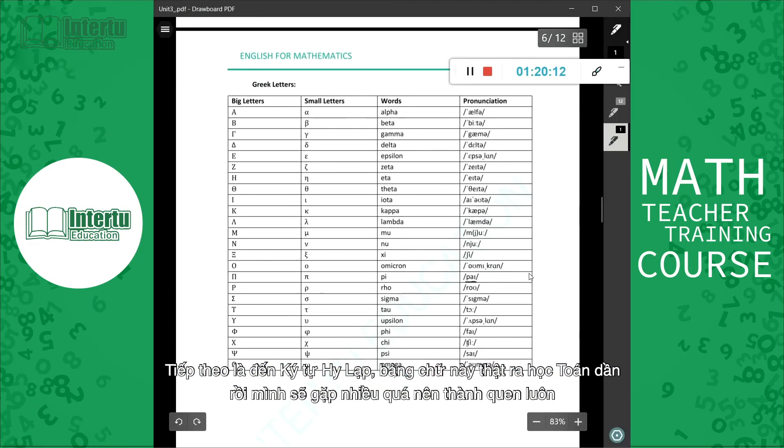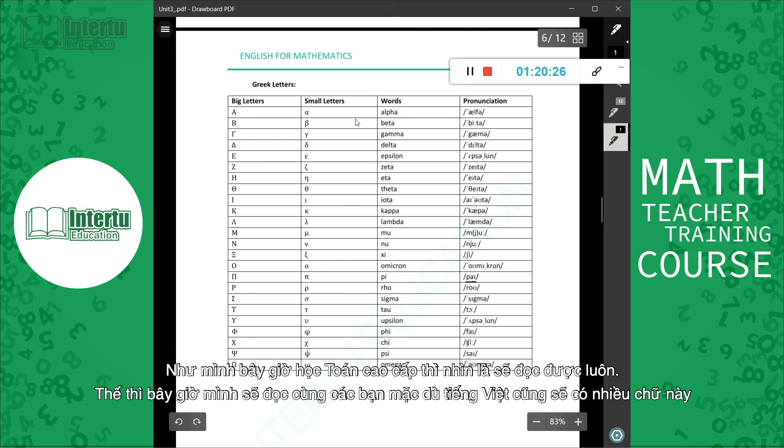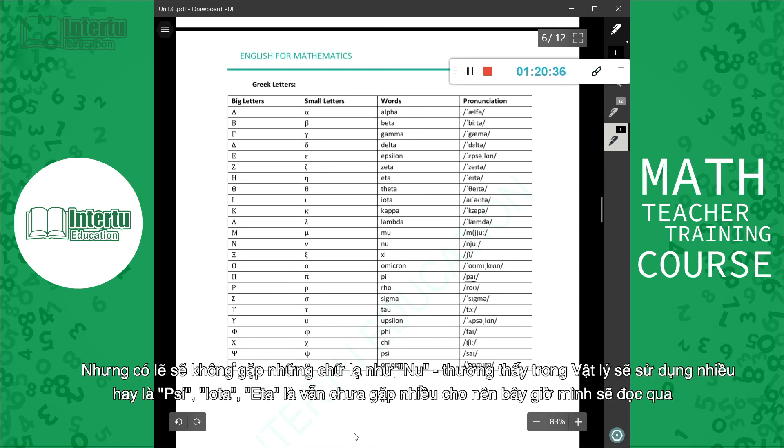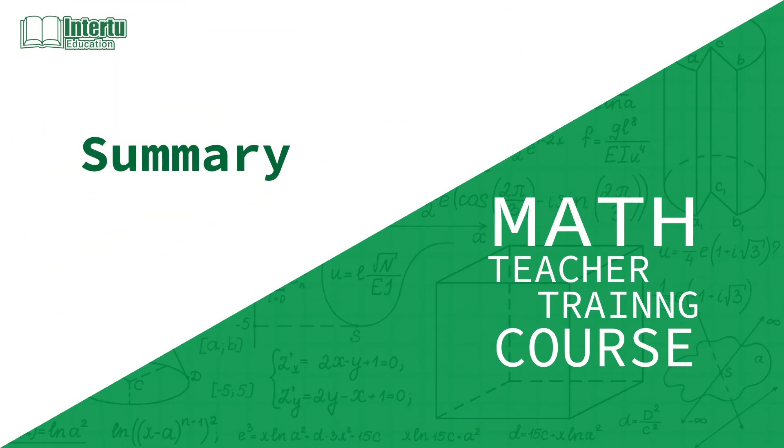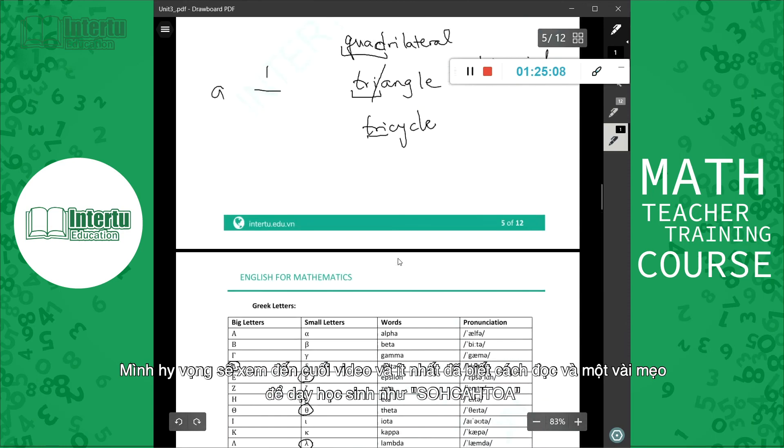[Vietnamese: Next is the Greek alphabet. For those studying math gradually, these numbers, these letters, we'll encounter them so much we'll become familiar with them. But now as we study math up to advanced mathematics, looking at these letters I'll read them with you. So now I'll read together with you, even though Vietnamese will also have these, right? But maybe we won't encounter letters that are strange, like Nu here - Nu, I see this used a lot in physics. Or Psi. Or letters like Iota or Eta - perhaps we haven't encountered much yet. So now I'll read through them.]